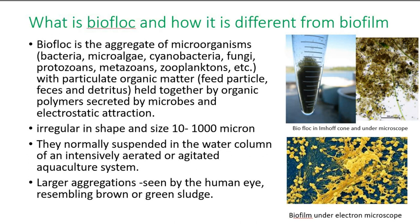Biofloc will be irregular in shape always. That shape and size depends on the age of the biofloc. It starts from 10 to 1000 microns — in earlier stages the particle may be 10 or 100 microns, and over time it may grow as more organisms accumulate together. Particle size increases, but shape is always irregular. They are normally suspended in the water column, so we need to keep the aeration — pumping pressurized air in the water creates vertical movement.